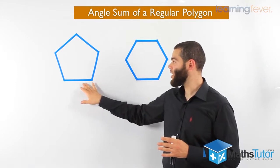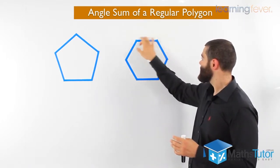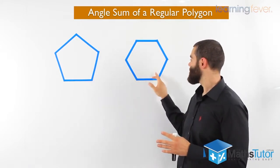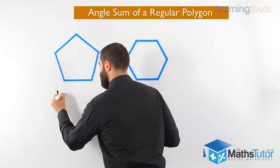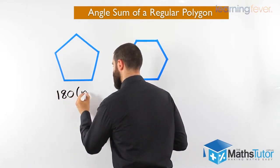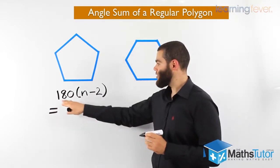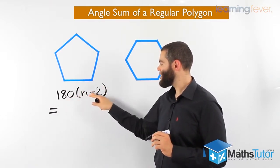A regular pentagon has five equal sides and five equal angles. A hexagon has six equal sides and six equal angles. The formula we use to work out the angle sum is: 180 times (n minus 2). That is the formula for the angle sum of a polygon — 180 multiplied by everything in the bracket, n take away two.